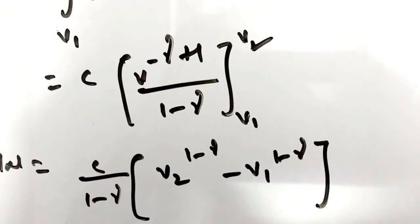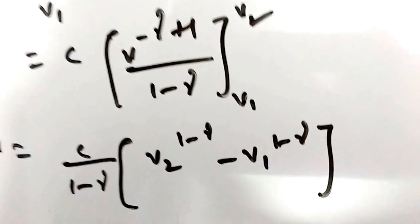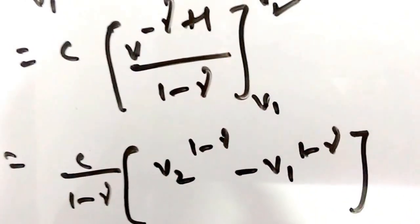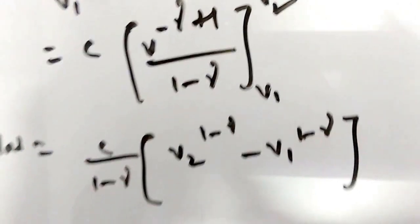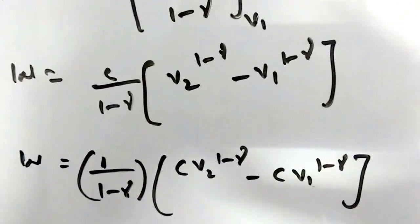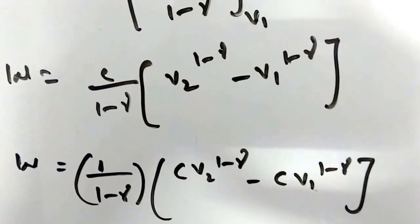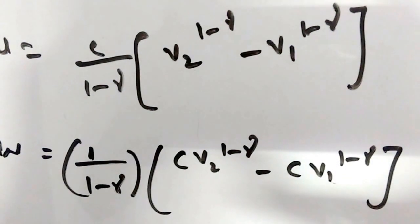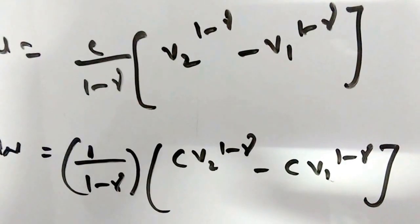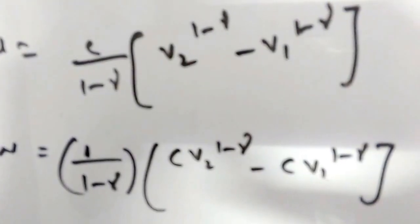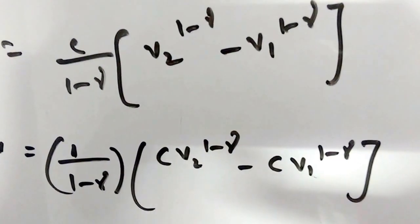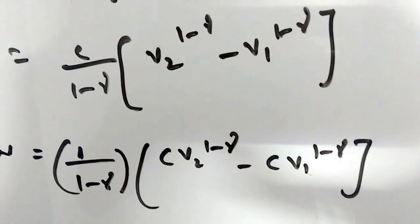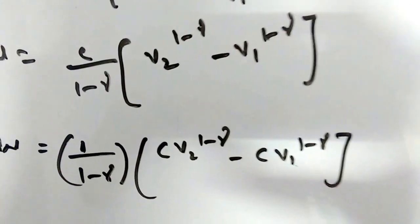Applying the limits, W = C / (1 − γ) × [V2^(1−γ) − V1^(1−γ)]. Multiplying through by constant C, this becomes W = 1 / (1 − γ) × [C·V2^(1−γ) − C·V1^(1−γ)].